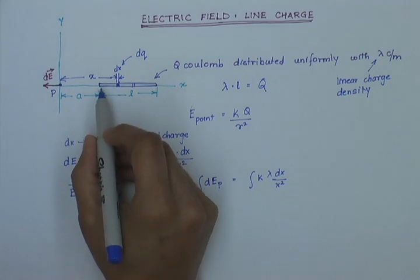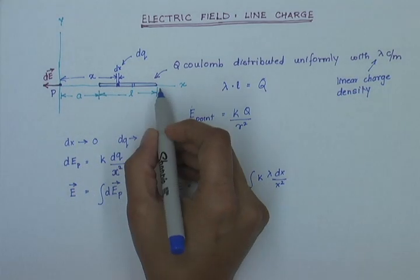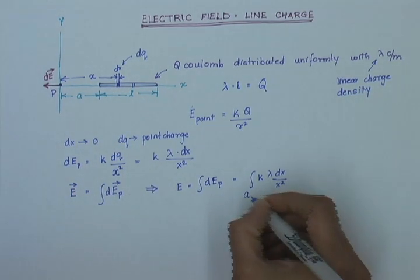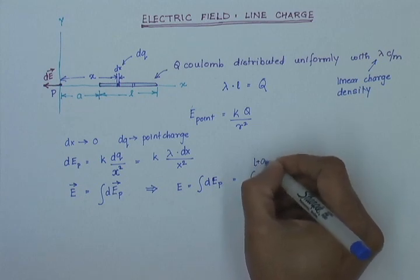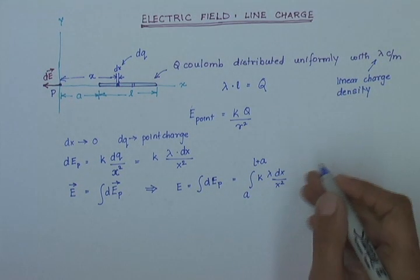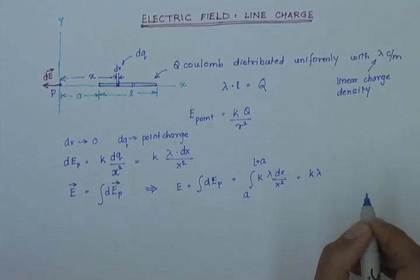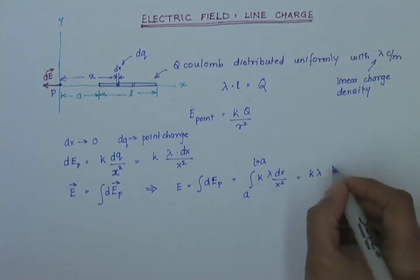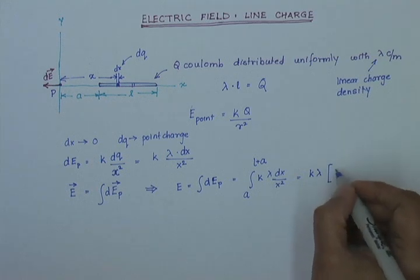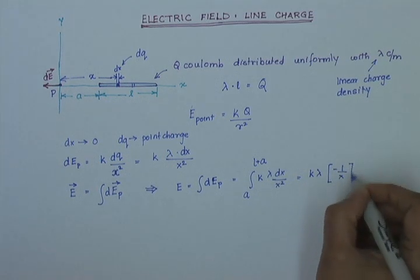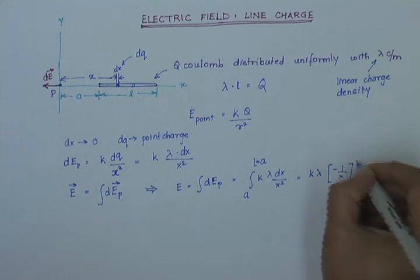And the limits goes from A to A plus L because I want to cover my full rod. And now, it is just an integration problem. So, my k and lambda are constant. When I take the integral, I get this as minus 1 over x, the limits are A to L plus A.